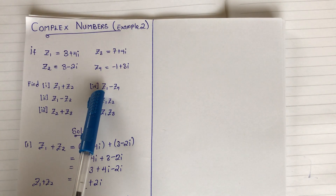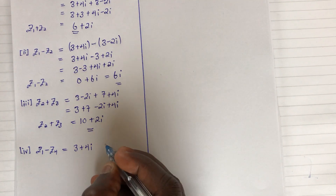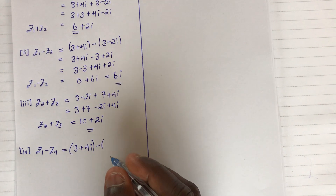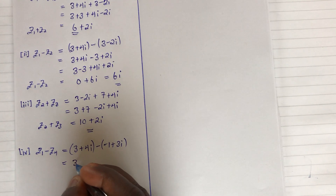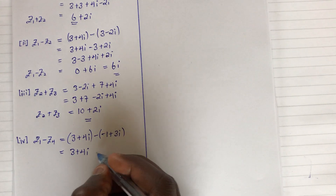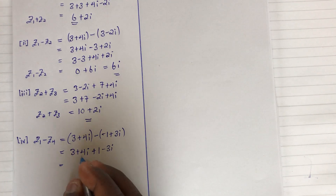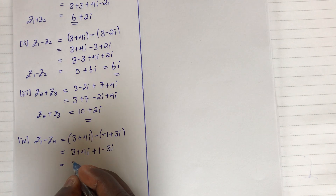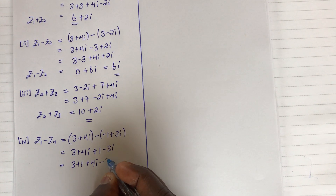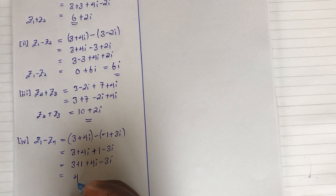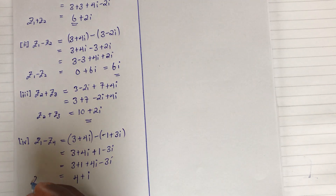Next, z1 minus z4: z1 is 3 plus 4i, and z4 is negative 1 plus 3i. Removing the bracket by distributing the negative gives us 3 plus 4i plus 1 minus 3i. All real terms: 3 plus 1 equals 4. Imaginary terms: 4i minus 3i equals i. So z1 minus z4 equals 4 plus i.